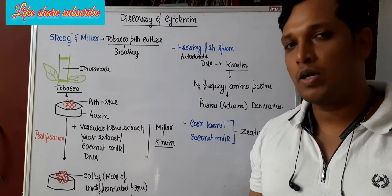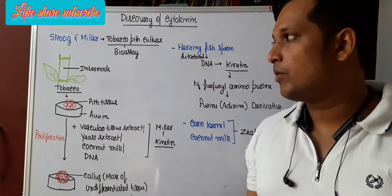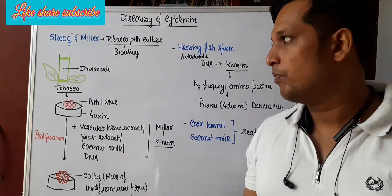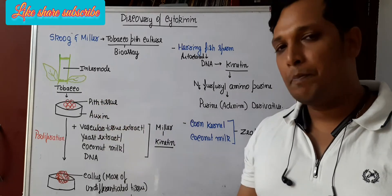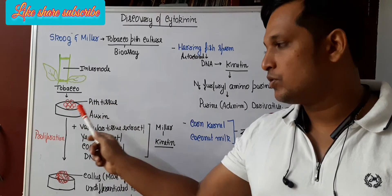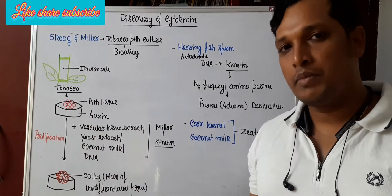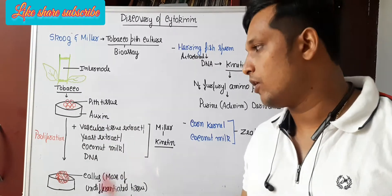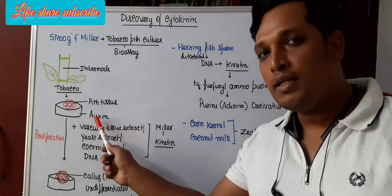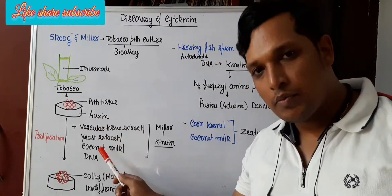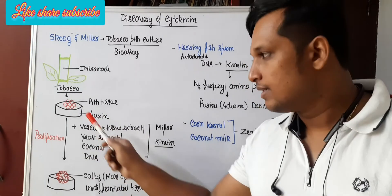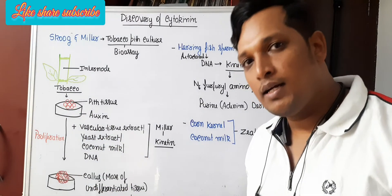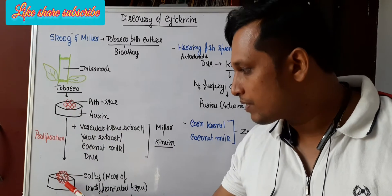Skoog and Miller performed the tobacco pith culture bioassay. They took a tobacco plant and collected internodal cells — the pith tissues. These pith tissues were grown in an artificial medium where they used auxin, which is a phytohormone. When auxin was mixed with other extracts, they observed that the pith cells proliferated — they started dividing.